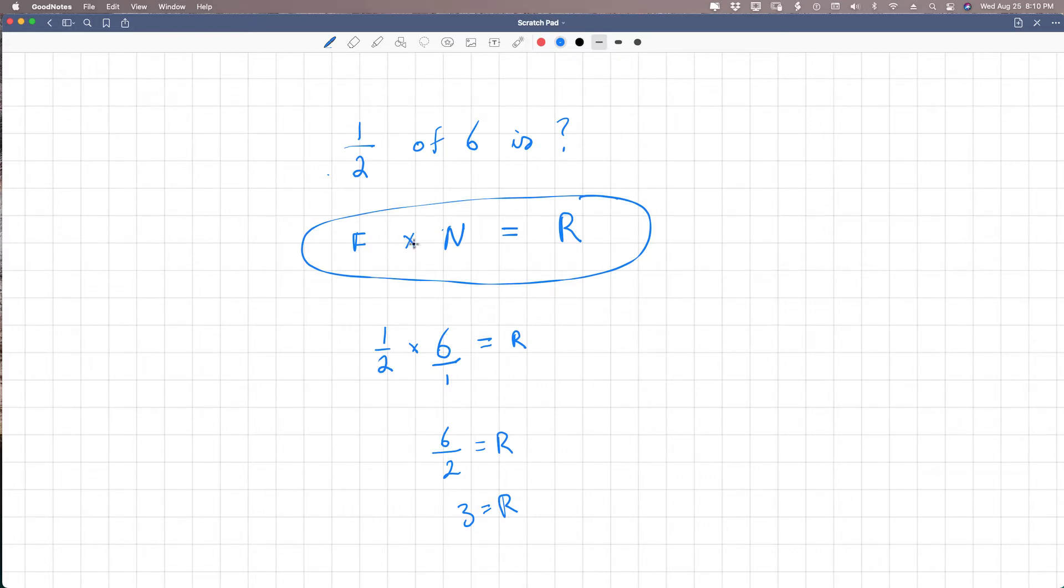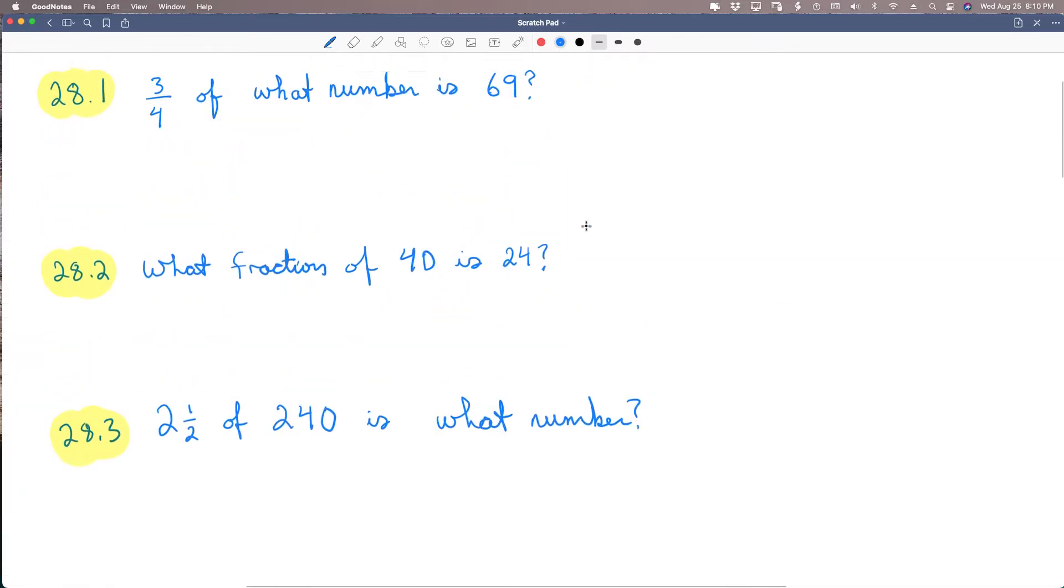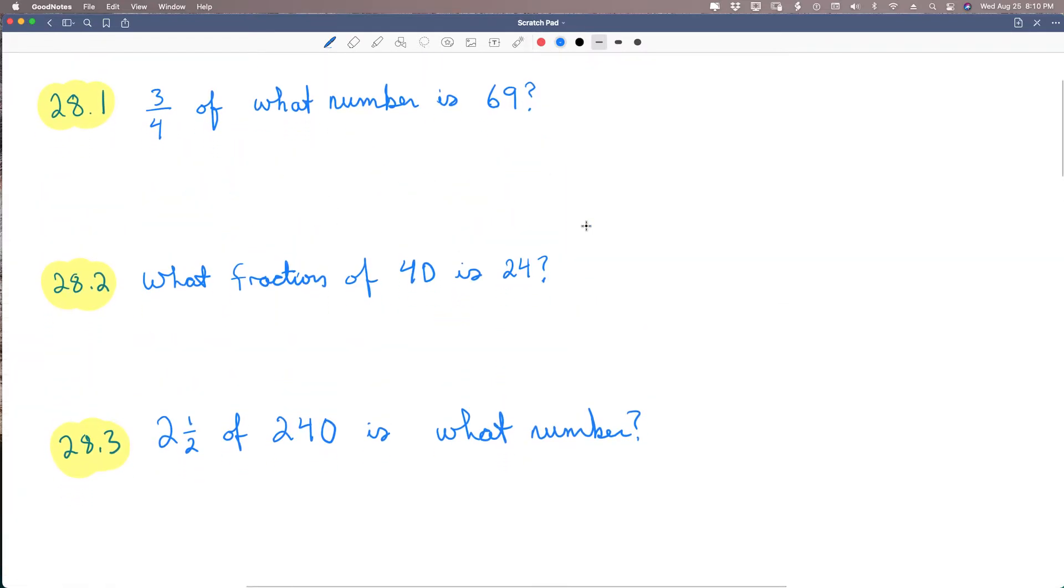So we use this formula, the fraction times some number gives us a result equals R. So let's use that on these problems from the book. There's only three of them, 28.1, 28.2, and 28.3.